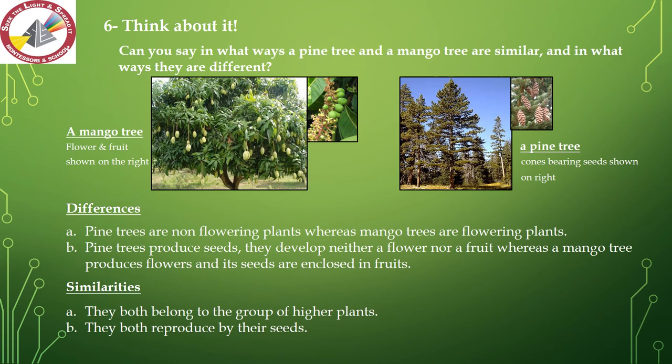Question number 6 — think about it. Can you see in what ways a pine tree and a mango tree are similar and in what ways they are different? Differences: pine trees are non-flowering plants whereas mango trees are flowering plants. Pine trees produce seeds but develop neither a flower nor a fruit, whereas a mango tree produces flowers and its seeds are enclosed in fruits. Similarities: they both belong to the group of higher plants and they both reproduce by their seeds.